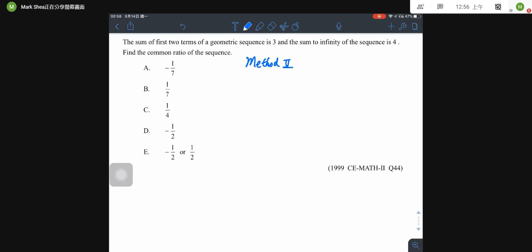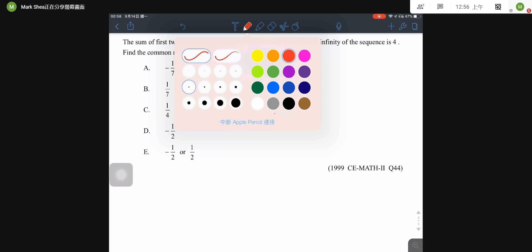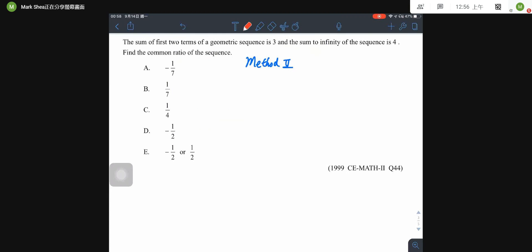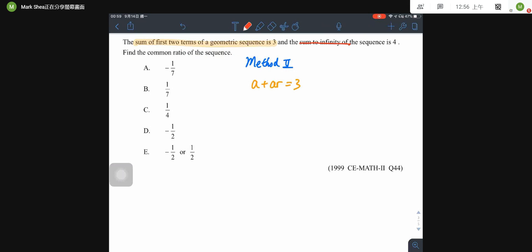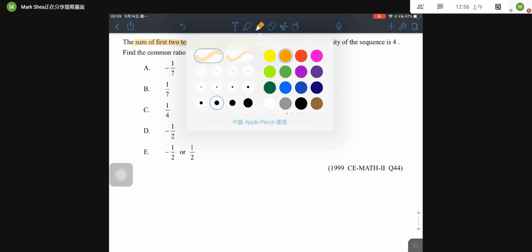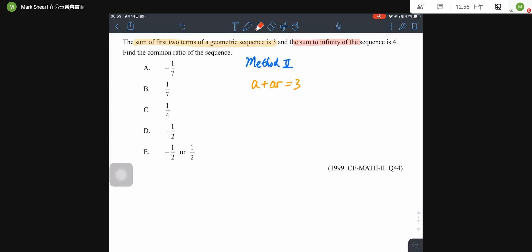Now, I will explain the second method to this question. Again, read the question carefully. The first one, the sum of the first two terms of this geometric sequence is 3. So, it means that I have a plus ar equal to 3. And then, for sum to infinity, it's 4. So, by using the formula, a over 1 minus r equal to 4. Now, then we just solve for a and r from the 2 equations.